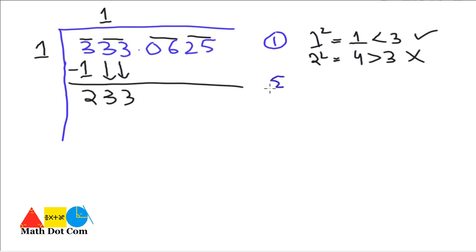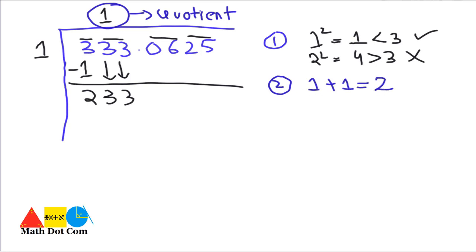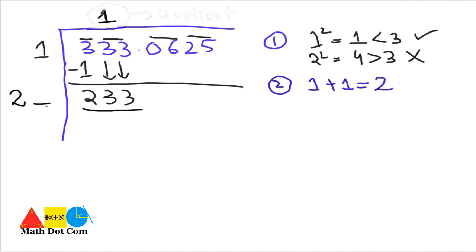In step 2, you have to double the quotient. The quotient is 1, so 1+1 = 2. We write 2 here with a blank space. We have to select a number to fill the blank such that 2_× _ gives us 233 or less than 233. If we try 22×2 = 44, 24×4 = 96 — both too small. Then 25×5 = 125, still small.